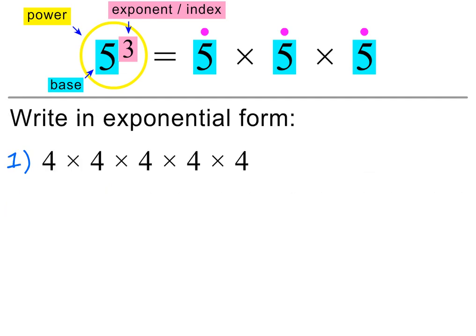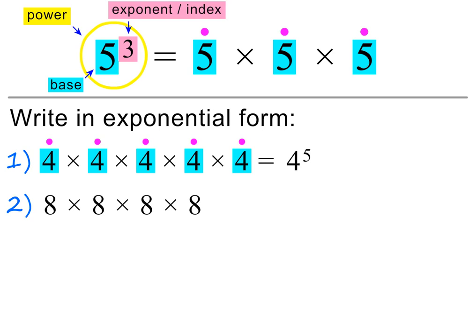You can also be asked to do this the other way round — where we need to write the expanded form in exponential form. The base is the number that is being multiplied by itself, and the number of times it is multiplied gives the exponent. Here 8 is being multiplied by itself 4 times, so the base is 8 and the exponent is 4.